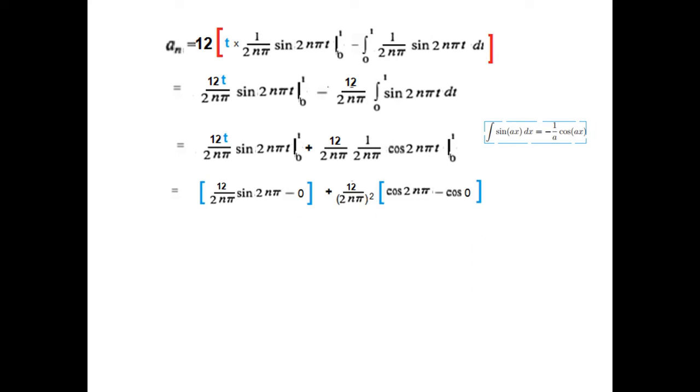Now, we'll simplify, putting the value of 1, and 0, we get these two terms. This will become 0, because when we multiply 12 by t, or 12 by 0, this term becomes 0. And, similarly, we put the limits in the second term, and now, this all comes out, and cos 2nπ, minus cos 0, for t, we put 1 and 0.